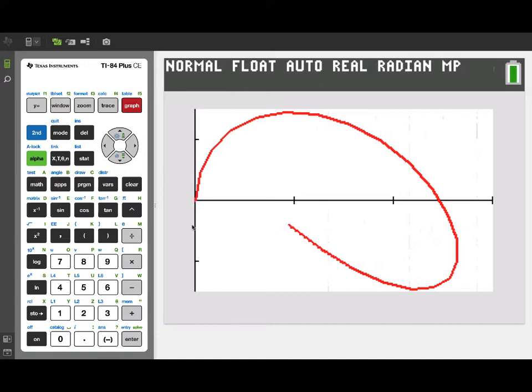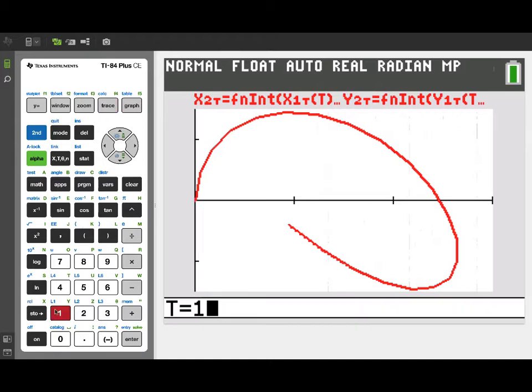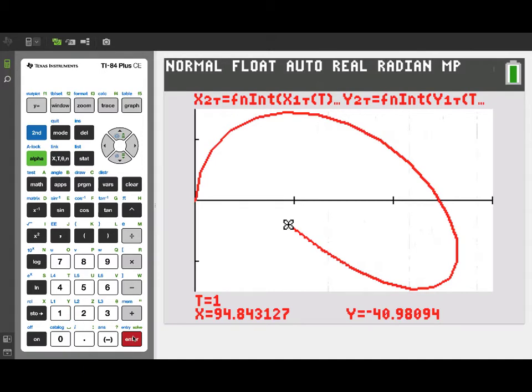In contrast, the displacement would be the actual change in position from the beginning to the end. We can actually get a readout of that by using trace. If I turn on the trace, remember we started at the origin. If we jump to t equals 1, we will jump to the ending position. And that's actually giving us the displacement. Our x changed by this amount and our y changed by this amount. So the displacement is actually a vector while the total distance traveled is a single number.